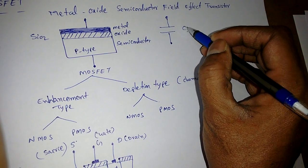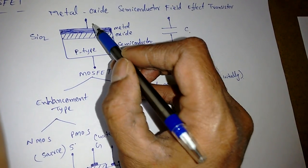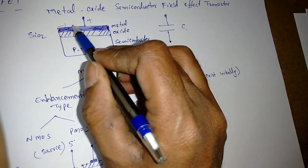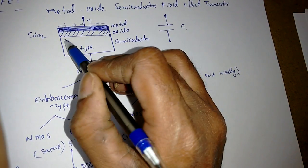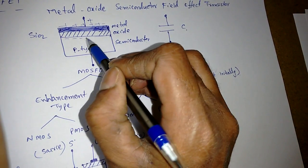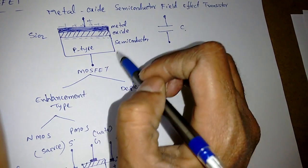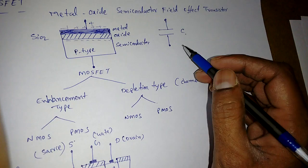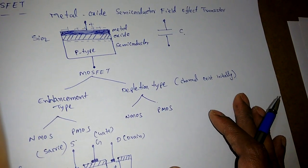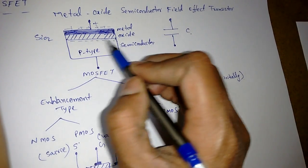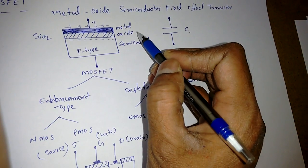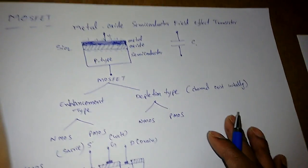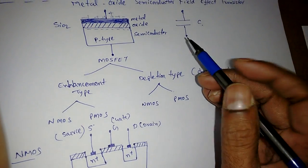This structure acts like a simple capacitor. When we apply a positive voltage on the metal side, positive charges accumulate there and corresponding negative charges appear on the semiconductor side. The oxide layer is simply a dielectric material between the two conducting plates, just like in a parallel plate capacitor.